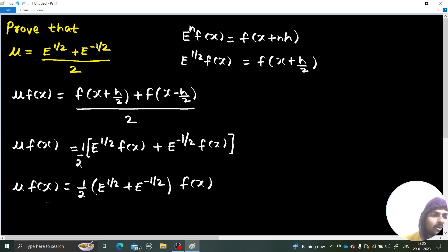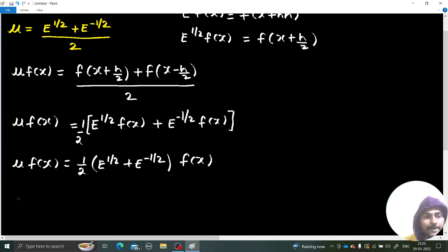So because on both sides the function is same, which is fx, we can directly now compare the operators. So your mu is E power half plus E power minus half, divided by 2.